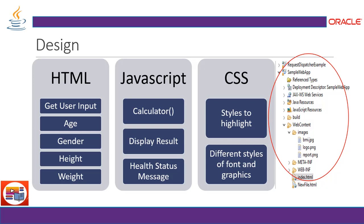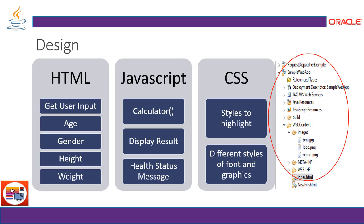JavaScript will calculate the BMI by taking values from the HTML input tags and implementing the BMI formula, then display the result, health status and a message. Since BMI is going to be different for different genders and ages, that factor is also implemented for a more precise and accurate report. CSS is simply going to style the webpage with fonts and graphics.